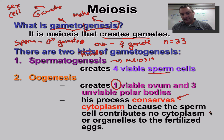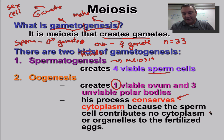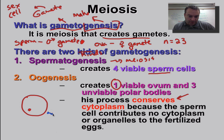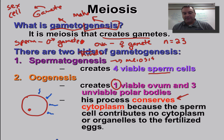You're conserving your cytoplasm because the sperm cell doesn't contribute any cytoplasm or real organelles. A sperm cell is essentially a nucleus on a stick, and that stick just wiggles and swims to where it needs to go. Here's the egg cell — shown here in red — and the tiny little sperm cells in blue. Notice the sperm cell is just a nucleus on a stick.